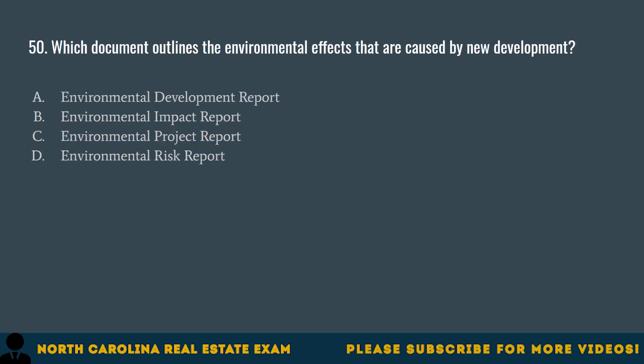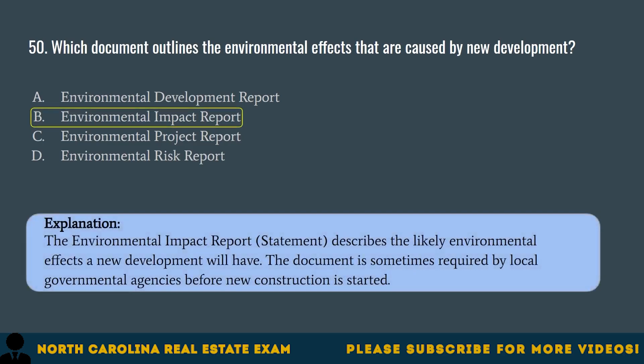Question 50. Which document outlines the environmental effects that are caused by new development? A. Environmental Development Report. B. Environmental Impact Report. C. Environmental Project Report. D. Environmental Risk Report. The correct answer is B. Environmental Impact Report. The Environmental Impact Report describes the likely environmental effects a new development will have. The document is sometimes required by local governmental agencies before new construction is started.